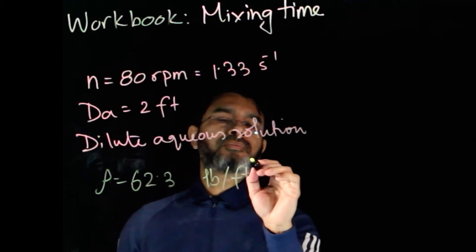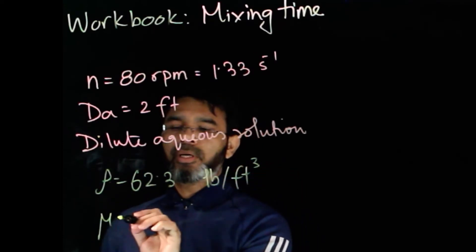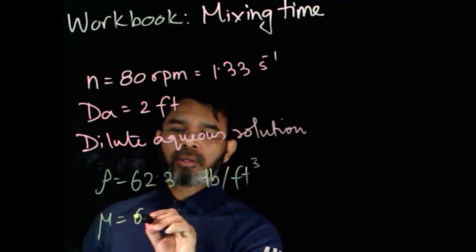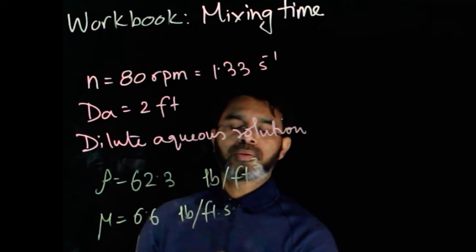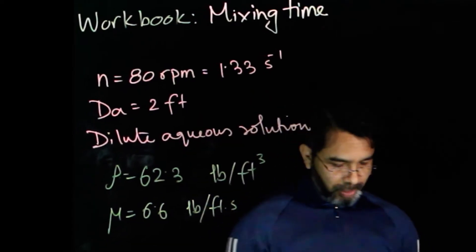And we'll use μ to be 6.6 × 10⁻⁴ pounds per foot-second. Now this is the given information. We need to find out what is the mixing time.